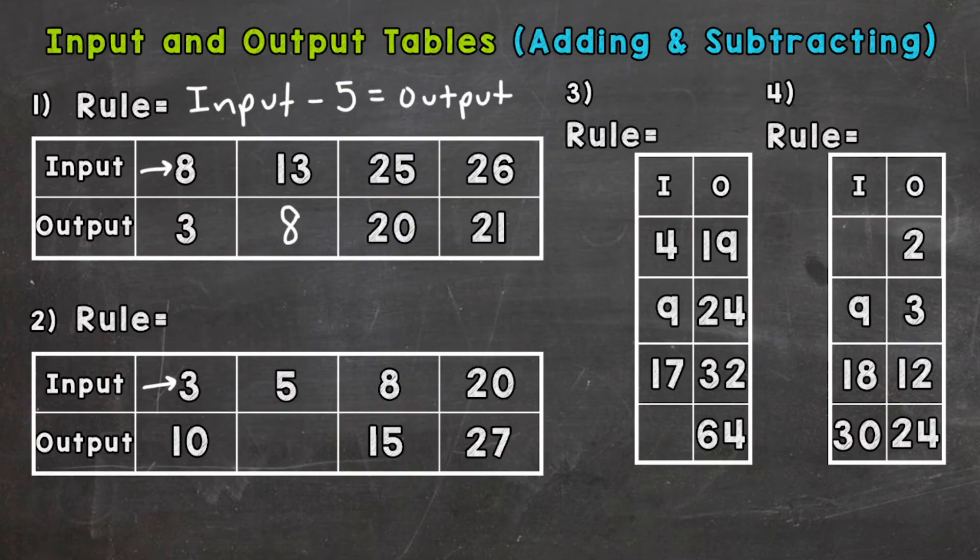Hopefully you're thinking adding 7 for each input: 3 plus 7 is 10, 8 plus 7 is 15, and 20 plus 7 is 27. So our blank here, 5 plus 7, gives us 12. And our rule is going to be our input plus 7 equals our output.